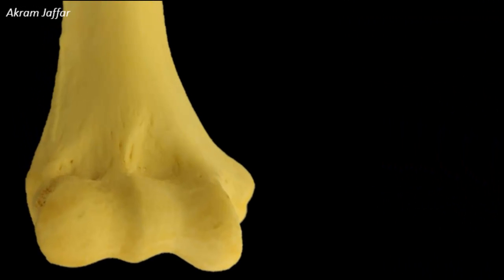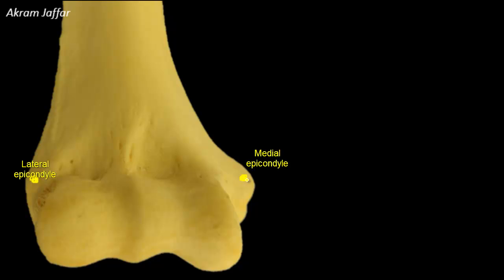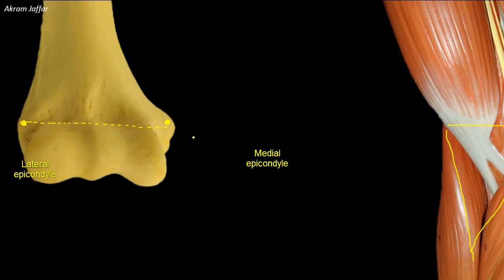The base of the triangle is an imaginary line that passes between the epicondyles of the humerus. Here you can see the distal end of the humerus, the lateral epicondyle, and the more prominent medial epicondyle, with an imaginary line in between them that forms the base of the triangle of the cubital fossa.